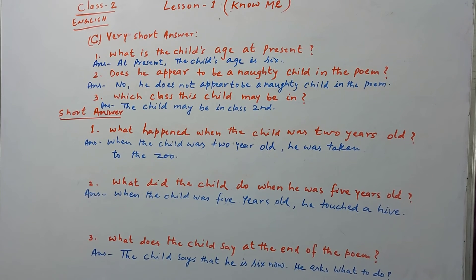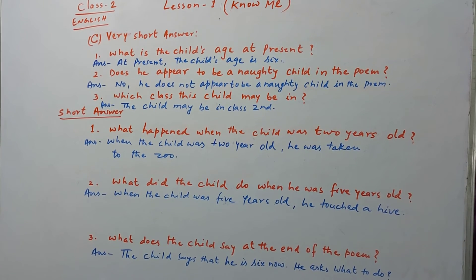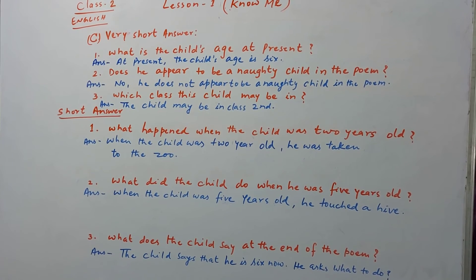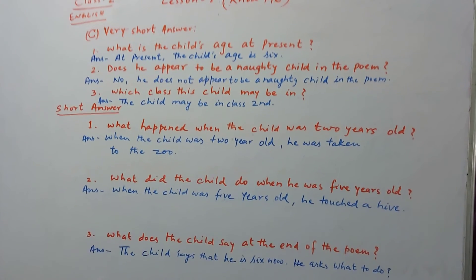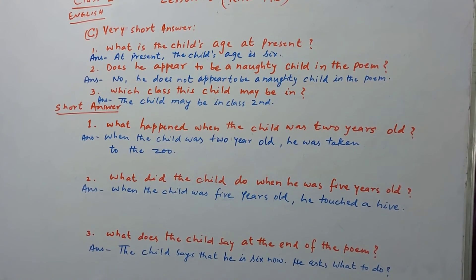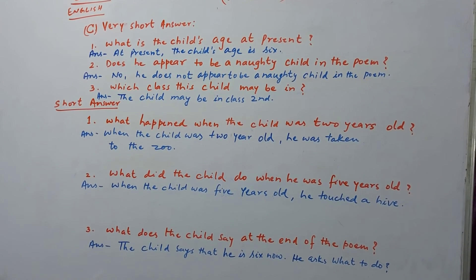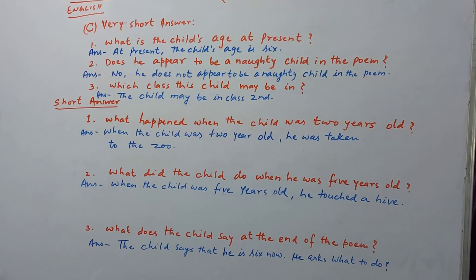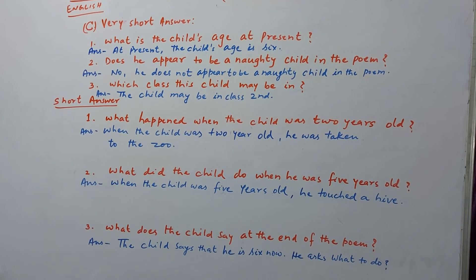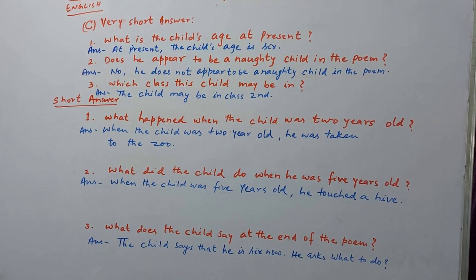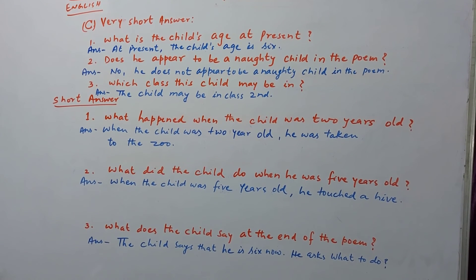Question number 2: What did the child do when he was 5 years old? When the child was 5 years old, he touched a hive. Question number 3: What does the child say at the end of the poem? Answer: The child says that he is 6 now.